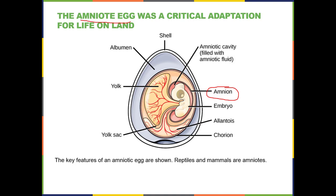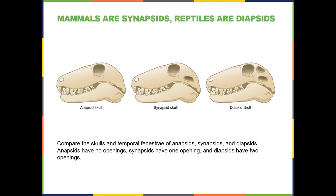At this point among amniotes there's a split into three kinds: the anapsids, the synapsids, and the diapsids. The easiest way to tell them apart is the skull — specifically how many temporal fenestrae, or holes, are present. Anapsids just have the eye socket. Synapsids have the eye socket plus a second opening. Diapsids have three openings total. Excluding the eye socket, synapsids have one extra opening and diapsids have two.